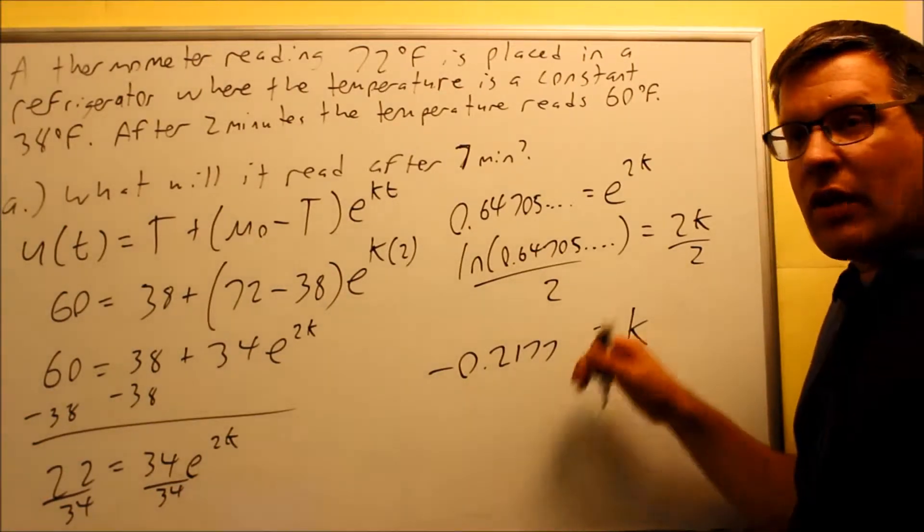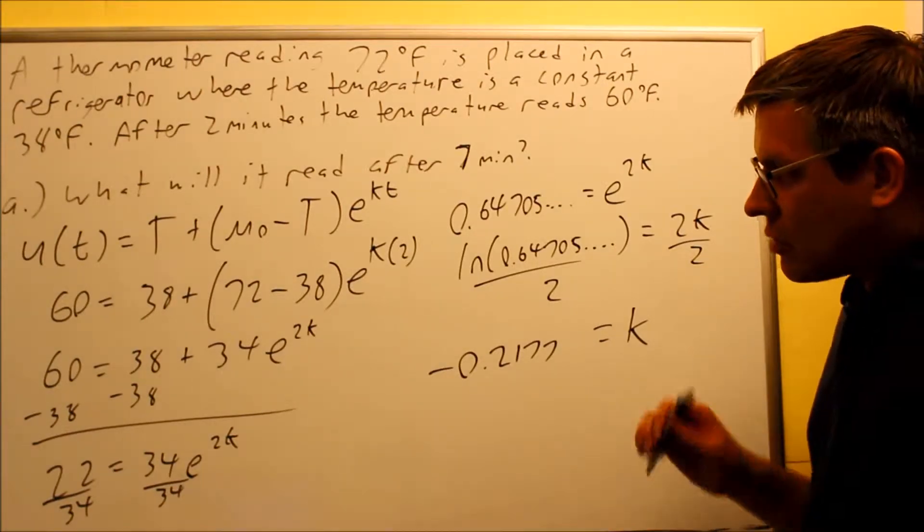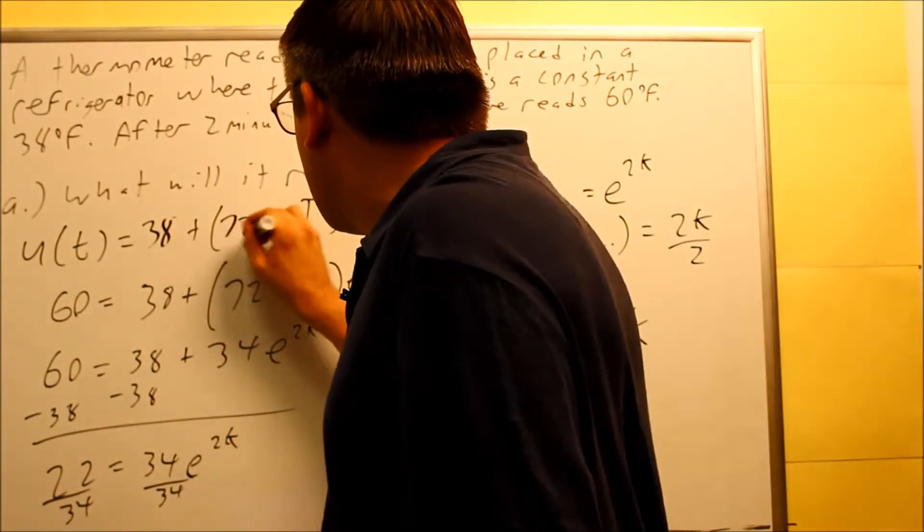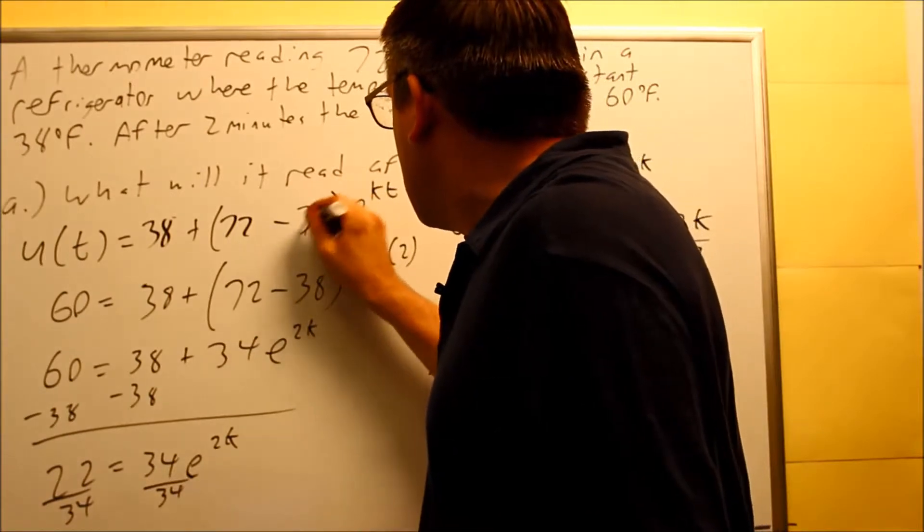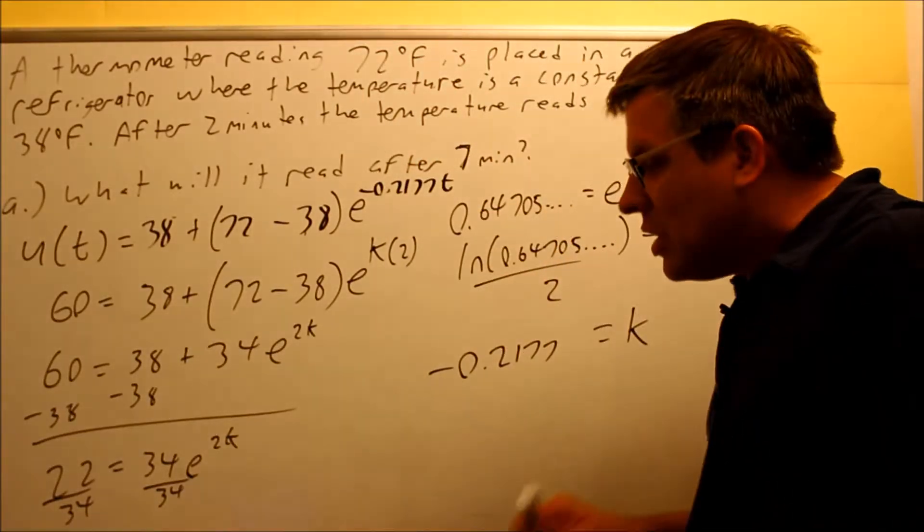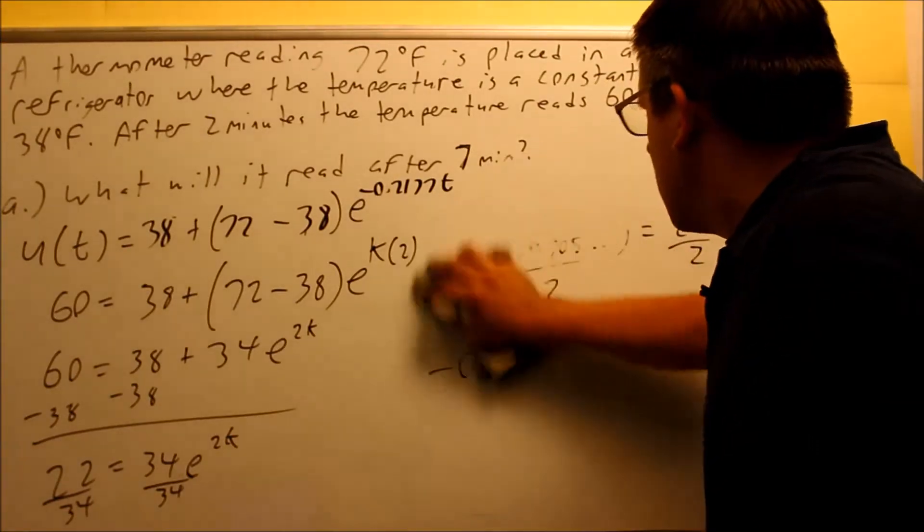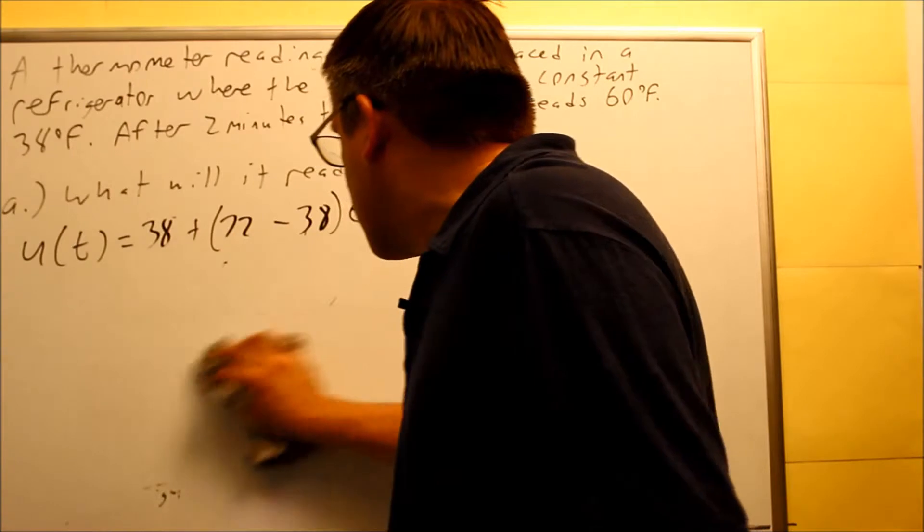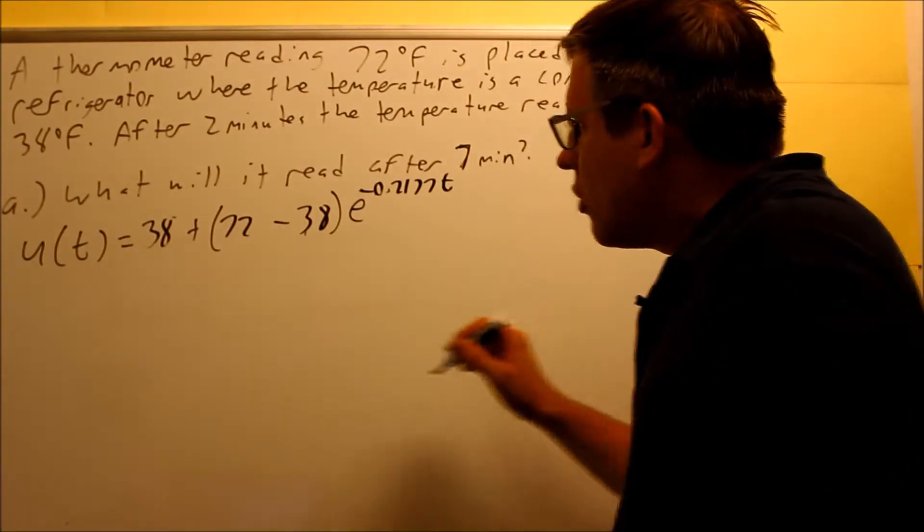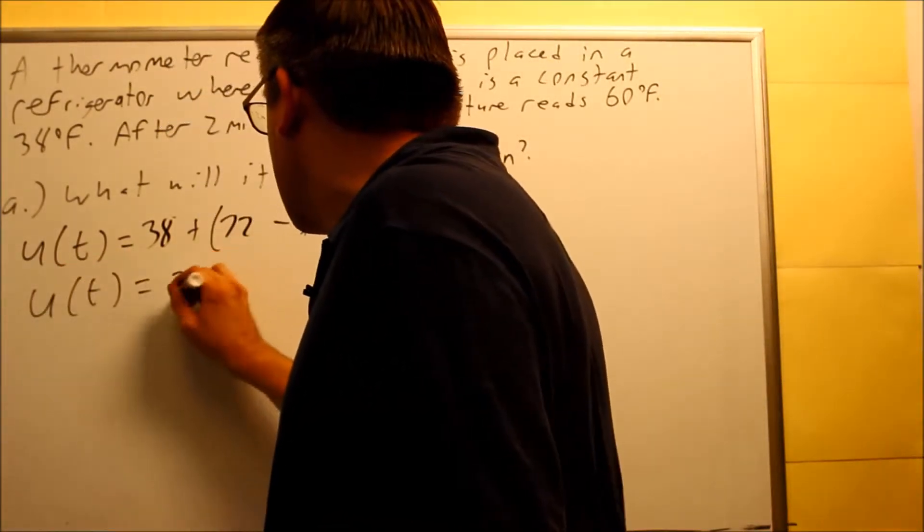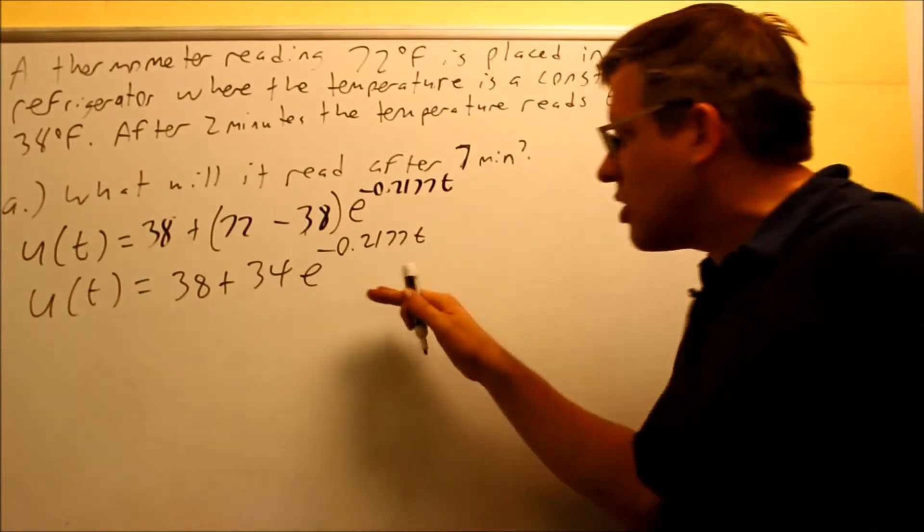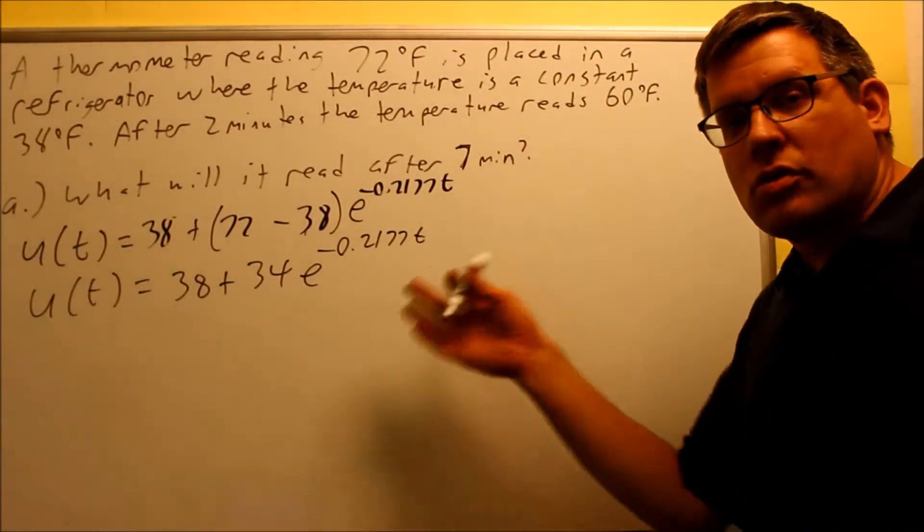Now we need to take this and write the exact formula that we're using for this problem. We have 38 here, 72, this is also 38, the k value negative 0.2177, and then times t. Now we have our exact formula. We had to do all that work just to get the right formula to answer this question. We're going to simplify this to u(t) = 38 + 34e^(-0.2177t). That's the specific formula for part A and part B.